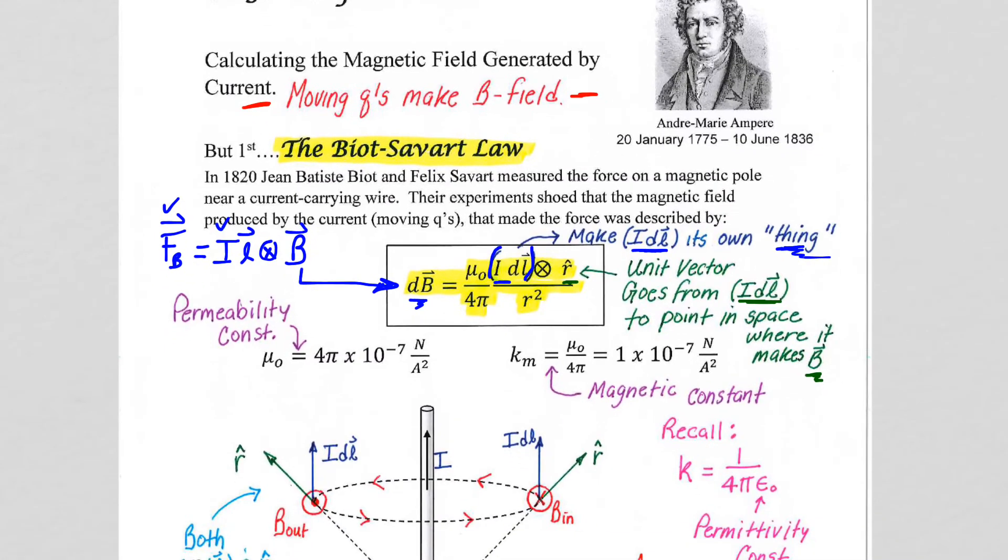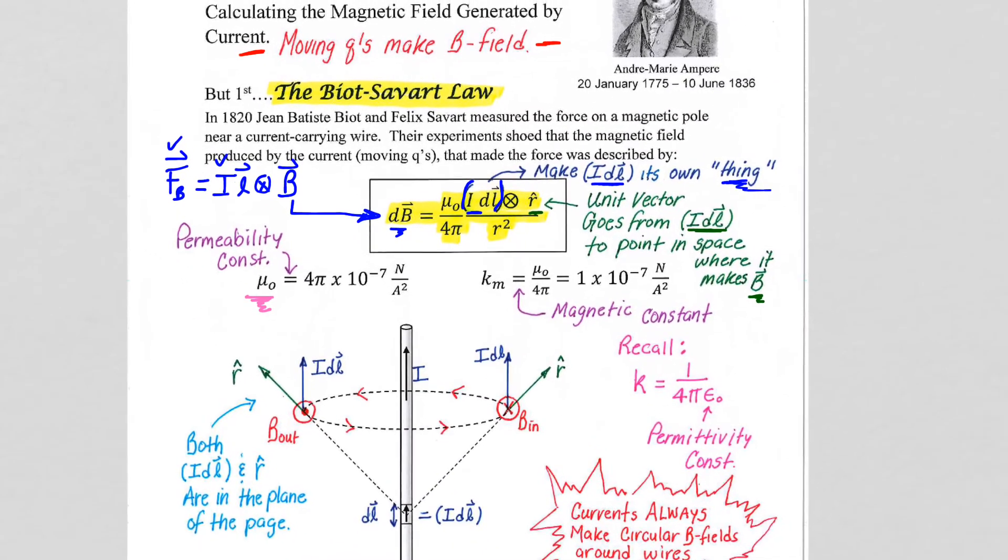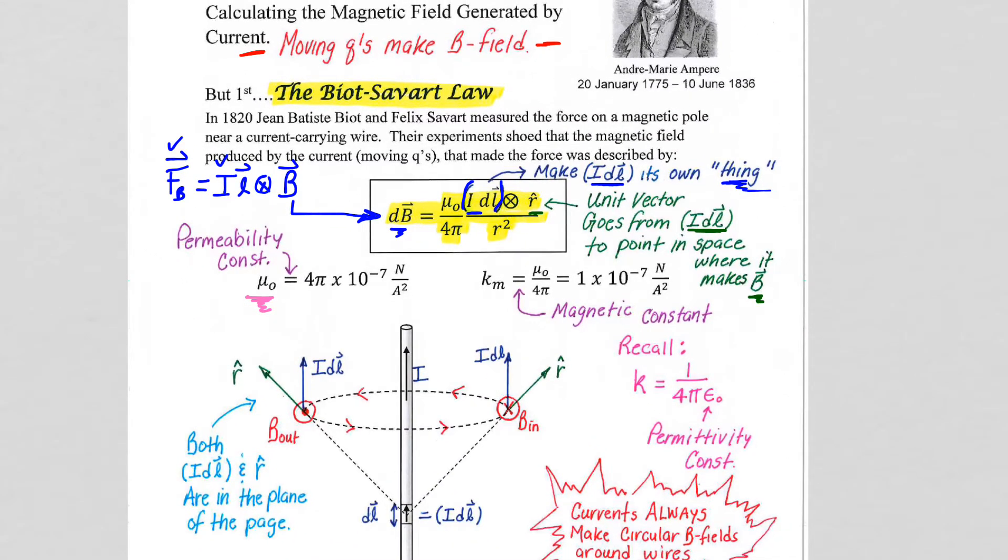Now, the mu naught and the fact that k sub m, the magnetic constant, is mu naught on 4 pi is a result of matching the experiment with standards and measures. So we don't need to worry about that later in the course when we go back to Maxwell and Maxwell's equations. We'll revisit this permeability constant, and to recall its electrostatic counterpart, we had the permittivity constant as the k in the Coulomb's constant, 1 on 4 pi epsilon naught.